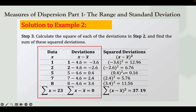Continuing the squared deviations: (0.4)² = 0.16; (2.4)² = 5.76; (3.4)² = 11.56. Adding all the squared deviations, the summation is 37.20.